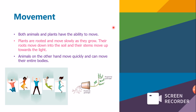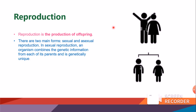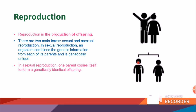Next is reproduction. Reproduction is the production of offspring. There are two forms of reproduction: sexual and asexual. In sexual reproduction, an organism combines the genetic information from each of its parents and is genetically unique. In asexual reproduction, one parent copies itself to form a genetically identical offspring.